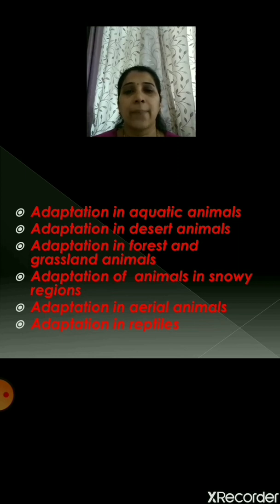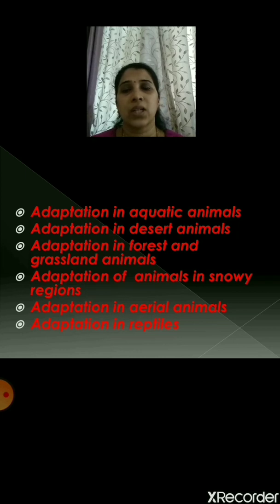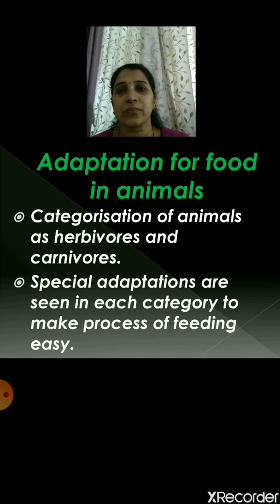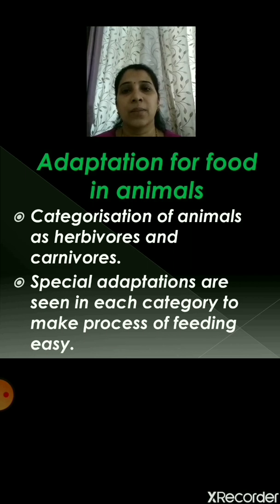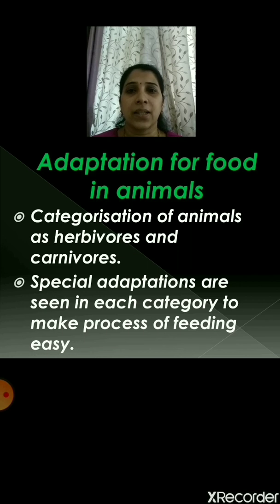Then we took about the adaptation in reptiles. We took examples of crocodile and snake, which use their muscles to creep. They also show adaptation in their skin, body color, etc. Now let's move to the next part — adaptation for food in animals. Animals are categorized into herbivores and carnivores, and special adaptations are made in each category to make the process of feeding easy.